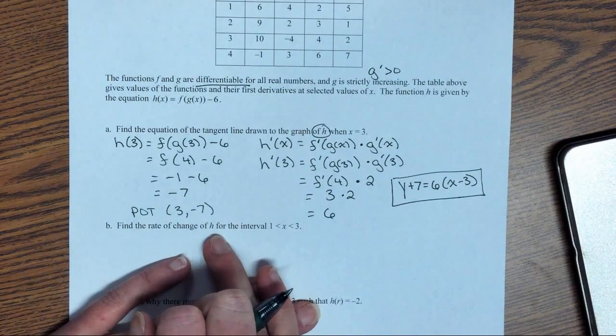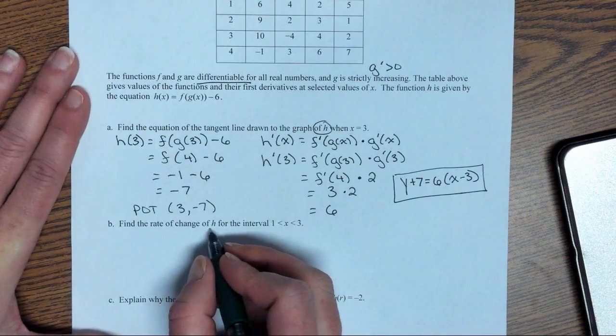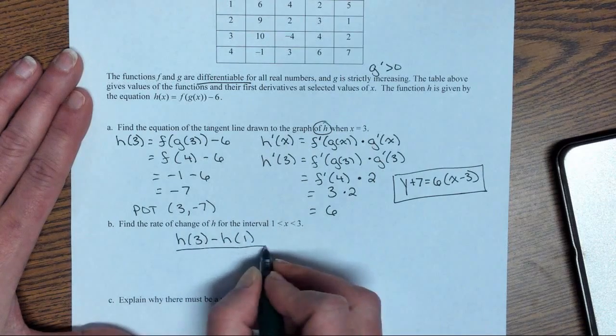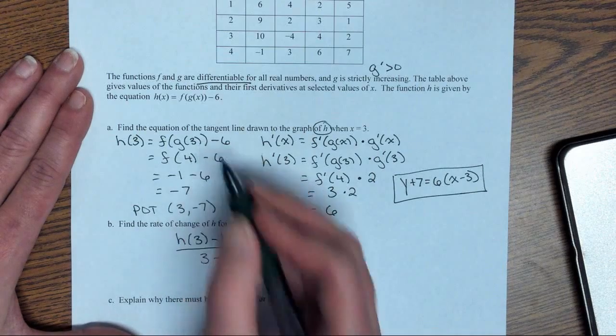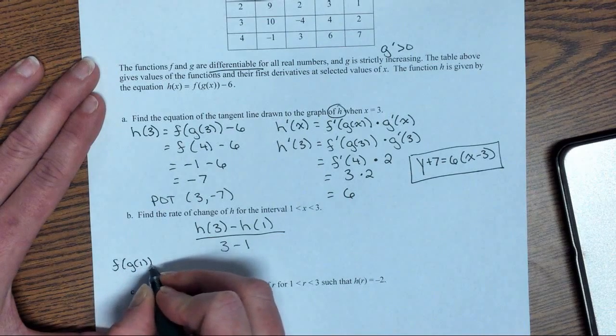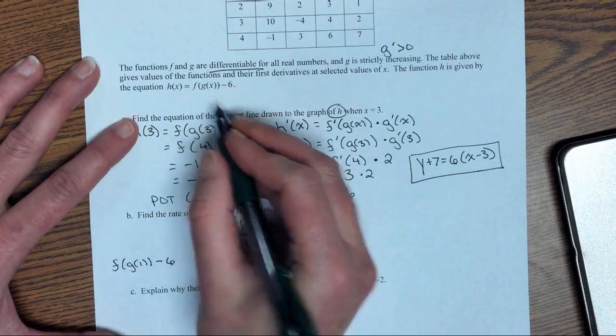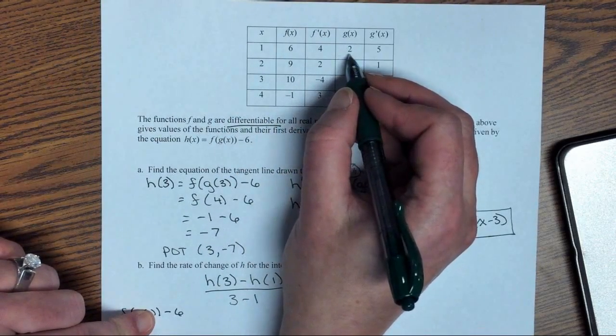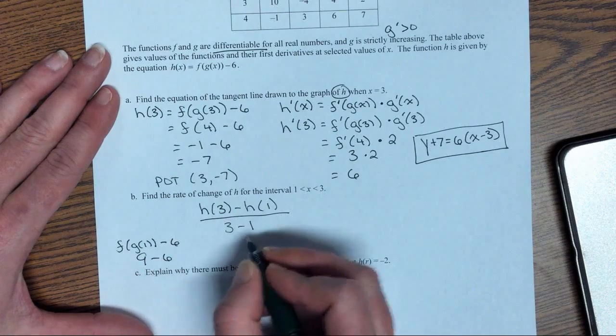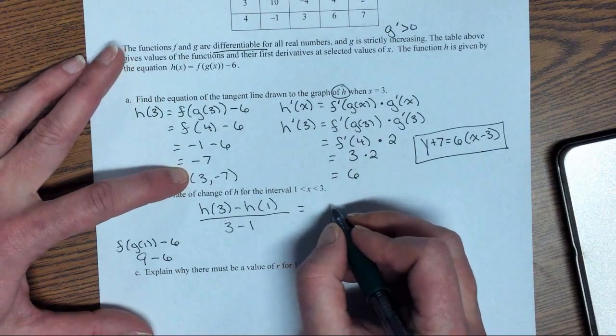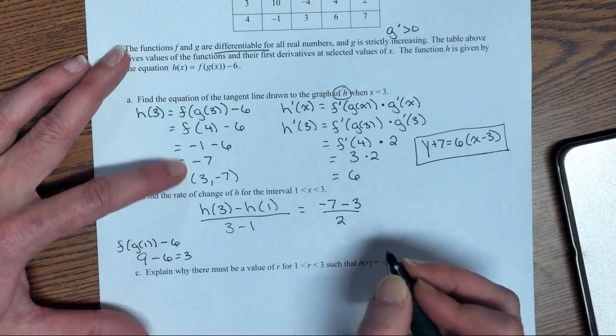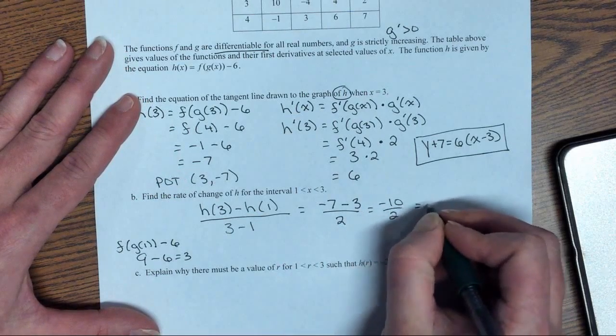Find the rate of change over the interval 1 to 3 of h. So we need to do h(3) minus h(1) over 3 minus 1. So I'm going to need to plug in 1 as well. So f(g(1)) - 6, plugging into that original function. So 1 goes into g gives me a 2. That goes into f and gives me a 9. So 9 minus 6 is 3. So h(3) is -7. h(1) is 3. Divided by 2. That's -10 divided by 2, which is -5.